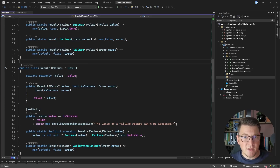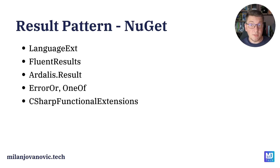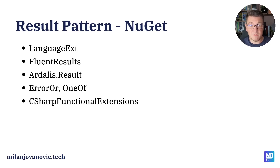This is my custom implementation, but you do not need to implement this yourself because there are many NuGet packages that already contain a result abstraction: the language extensions package, FluentResults, ErrorOr, OneOf (for implementing a discriminated union), and the C# functional extensions library. Any of these libraries are probably going to be sufficient, or you could roll your own custom abstraction since it isn't too complicated and you can modify it based on your requirements.